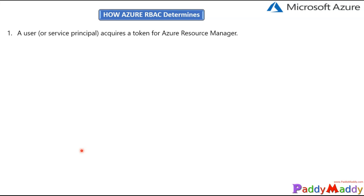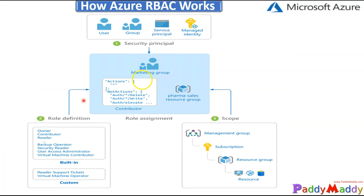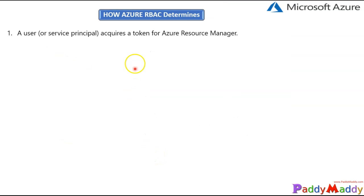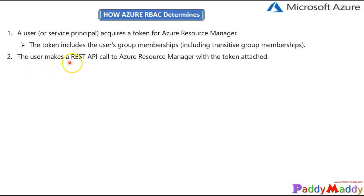Now let's understand how role-based access is determined in the backend. We talked about security principals, role definitions, and scopes. Let's put all three together and understand how the flow works. A user, security group, service principal, or managed identity acquires a token from Azure Resource Manager. The token includes user group membership, including transitive group membership. The user then makes a REST API call to Azure Resource Manager with the token attached.